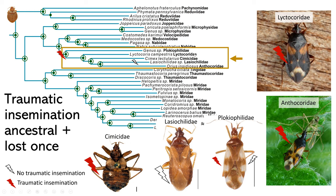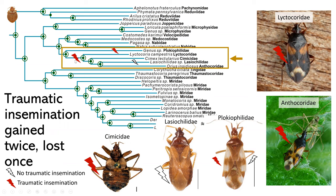For Clocheophilidae, the species we included does have traumatic insemination. We definitely need to include more representatives to get a better picture, but using our data set, we have a couple of hypotheses. Traumatic insemination could be ancestral to Cimicoidea and then lost once within Lasiochilidae, or it could have been gained twice — once within Clocheophilidae and once at the base of these families — and then subsequently lost in Lasiochilidae.